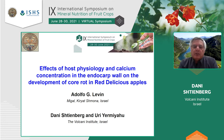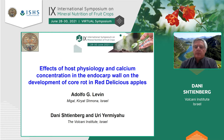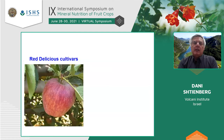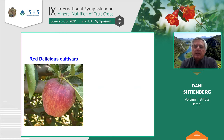The mineral nutrition status of trees markedly affects the response to plant pathogens. Today, we will focus on apple fruits. Apple is the largest deciduous crop under cultivation in Israel, and most of the area is cultivated with Red Delicious cultivars, about 30 percent of the area.